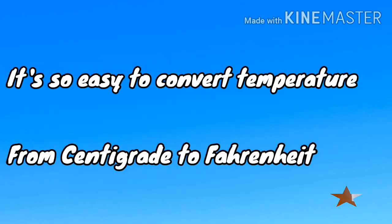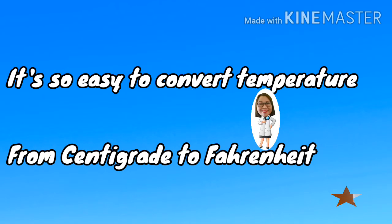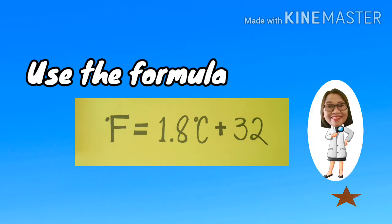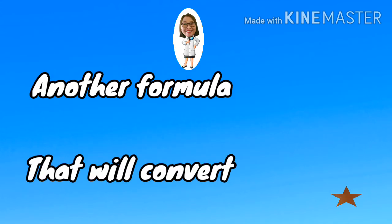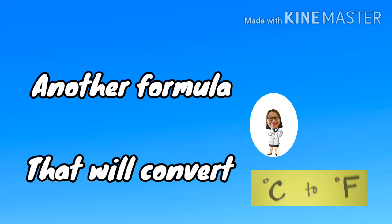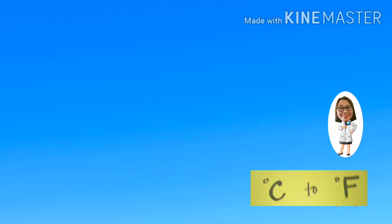It's so easy to convert temperature from centigrade to Fahrenheit. Here's the formula: Degree F equals 1.8 times degree C plus 32. Another formula that will convert degree C to degree F.